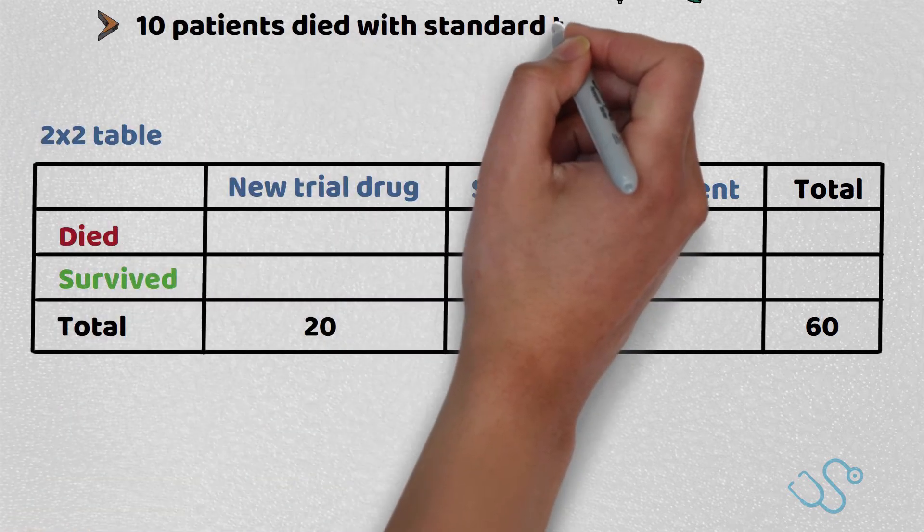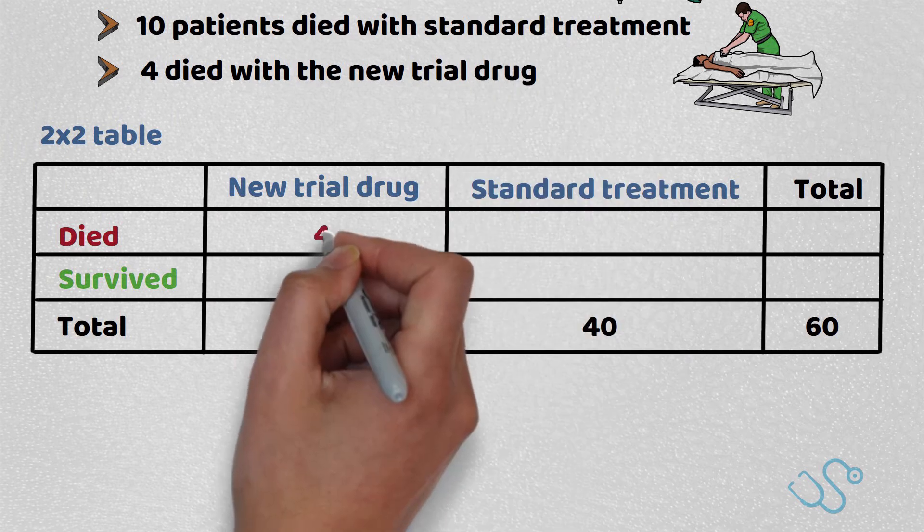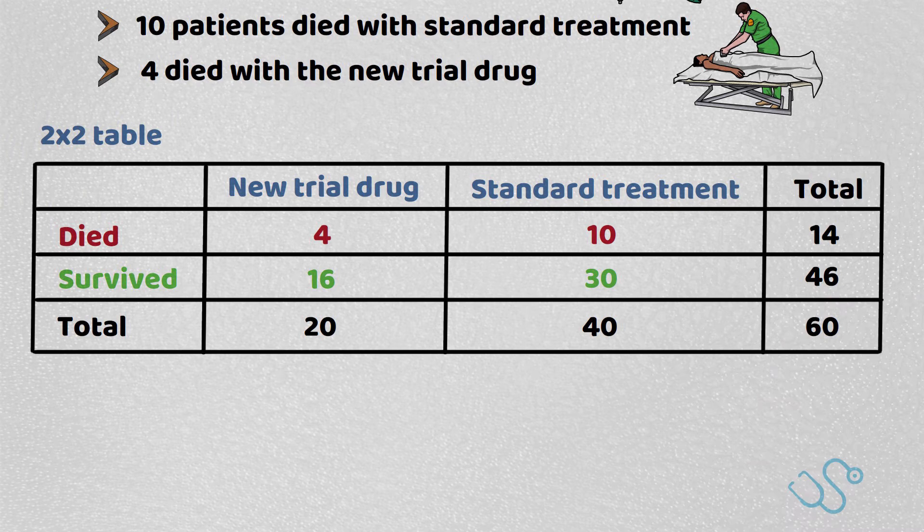Let's say that 10 patients died with the standard treatment and only four died with the new trial drug. We can add this to our table. Now we just fill in the blanks using simple maths so our table looks a bit like this.